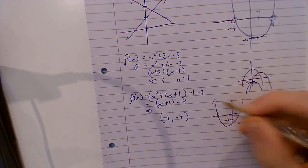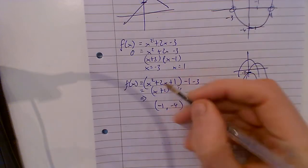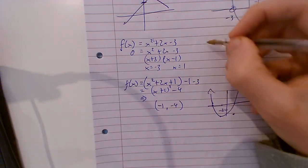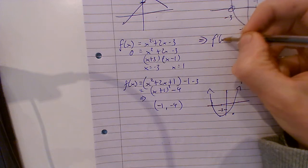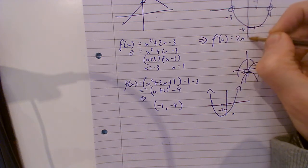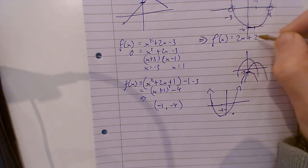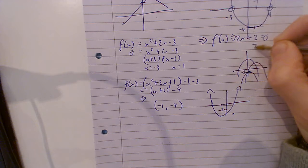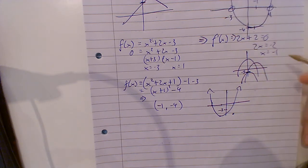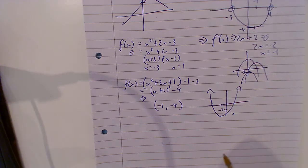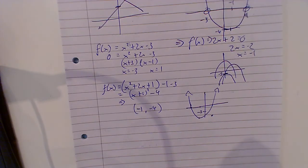That's how it looks. Now the better way to get this — and I know some of you are probably already thinking it — is f dash of x equals 2x plus 2. Make it equal to 0. So 2x equals minus 2, x equals minus 1. Divide and then substitute into y to get the y value. Calculus is always better. Simply put, just do the calculus.